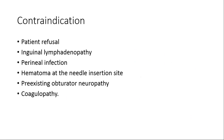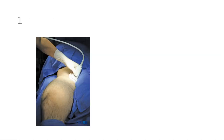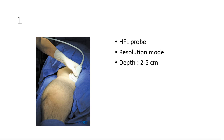Now coming to the technique. There are different approaches because the obturator nerve and its divisions lie between different muscles as they course distally. The first technique is to block the nerve at the level of the inguinal crease. Patient position is supine, leg slightly externally rotated and abducted. A high-frequency linear probe is used at a depth of 2 to 5 centimeters.